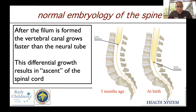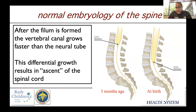After the filum terminale is formed, the vertebral canal actually grows faster than the neural tube. A common question for fourth-year medical students and interns is: at what age does the conus medullaris ascend to its anatomic position? Typically this happens at about three months. At birth, the tip of the conus occurs at between L2 and L3, and can be as low as L3-L4. At three months, as the vertebral column grows faster than the neural tube, it changes to L1-L2, where it typically stays for the rest of life. This is important when working up neural tube defects and spinal dysraphism, particularly when looking for tethering of the spinal cord by evaluating the location of the conus.